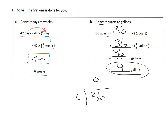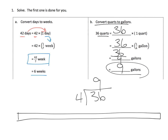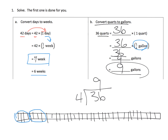Another way to think of this is to draw out 36 quarts. We know that every four of them equals a gallon, because a quart is a fourth of a gallon. A quick way of circling every four is dividing by four. So 36 divided by four is nine gallons.